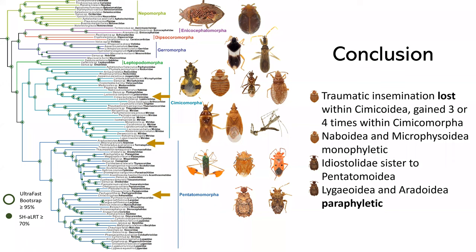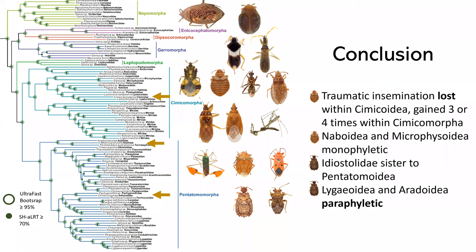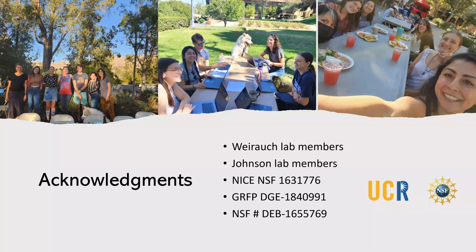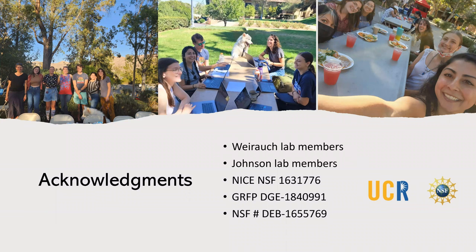In conclusion, we found that traumatic insemination is lost within Cimicoidea and gained three or four times across Cimicomorpha; that Naboidea and Microphysoidea are monophyletic; Ideostelloidea is sister to Pentatomoidea; and Lygaeoidea and Aradoidea are paraphyletic. I want to thank all of our lab members — the Viroc lab and the Johnson lab — as well as our various funding sources. I'm happy to take any questions.